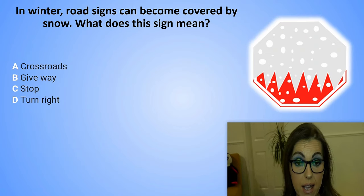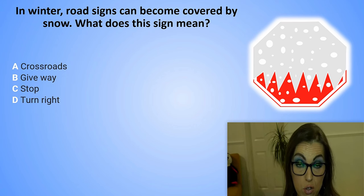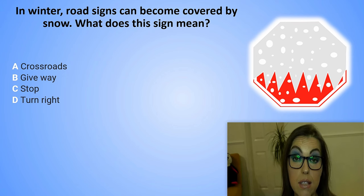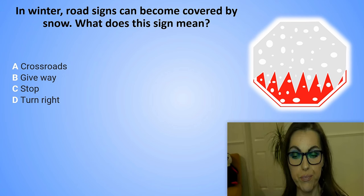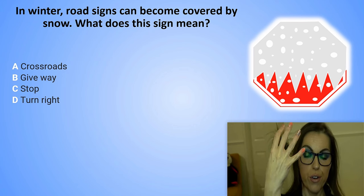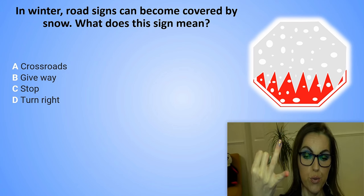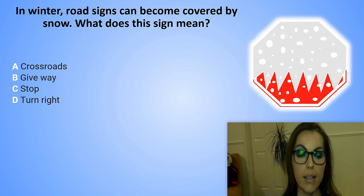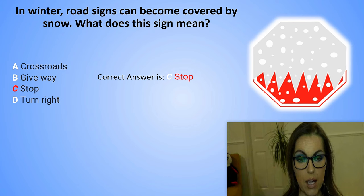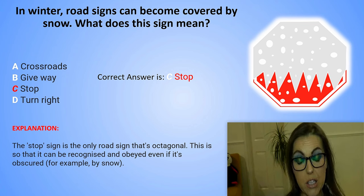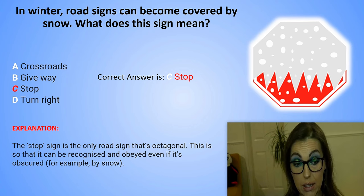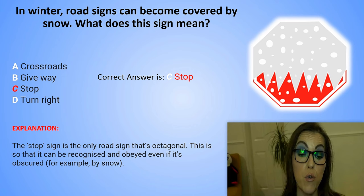In winter, road signs can become covered by snow. What does this sign mean? A. Crossroads. B. Give way. C. Stop. Or D. Turn right. The correct answer is C. Stop. Explanation: The stop sign is the only road sign that's octagonal. This is so that it can be recognised and obeyed even if it's obscured — for example, by snow.